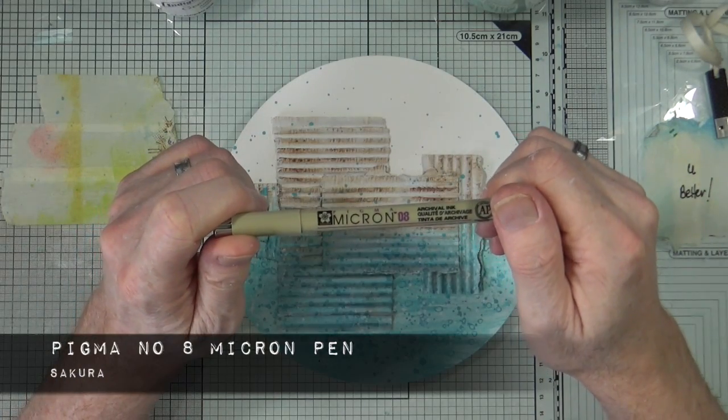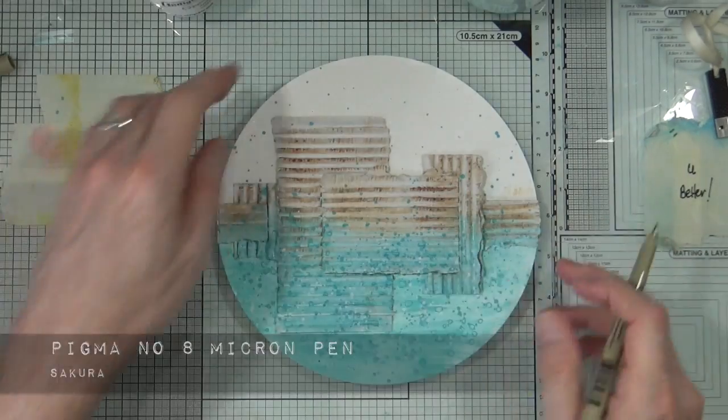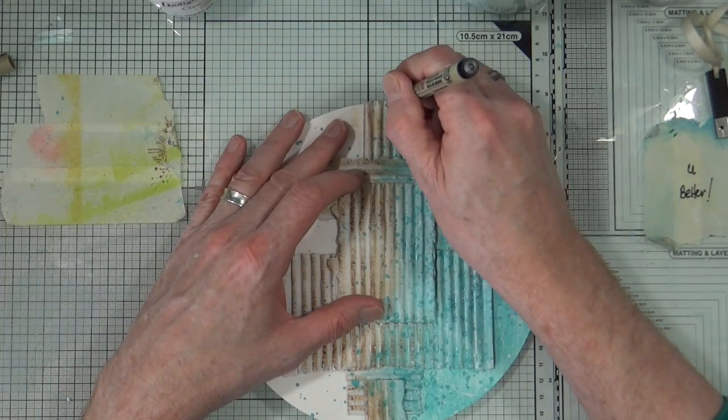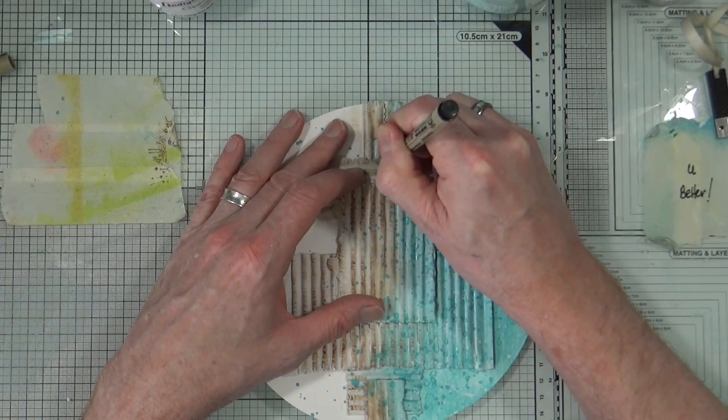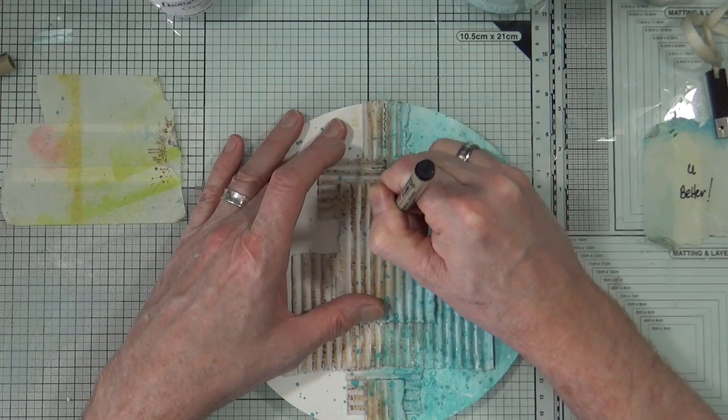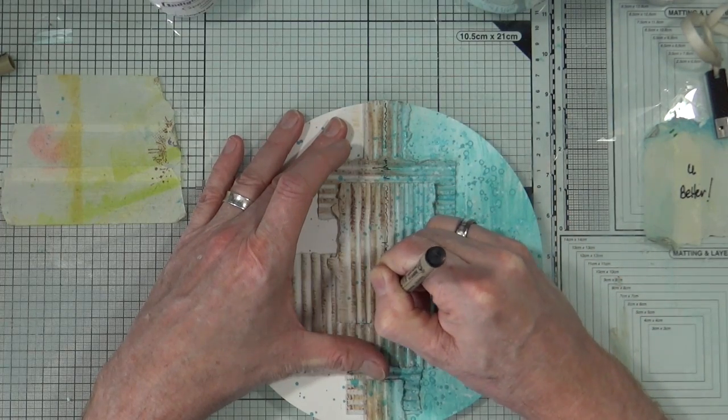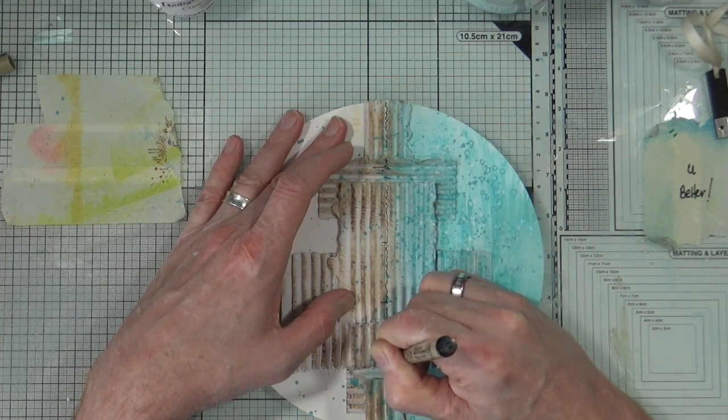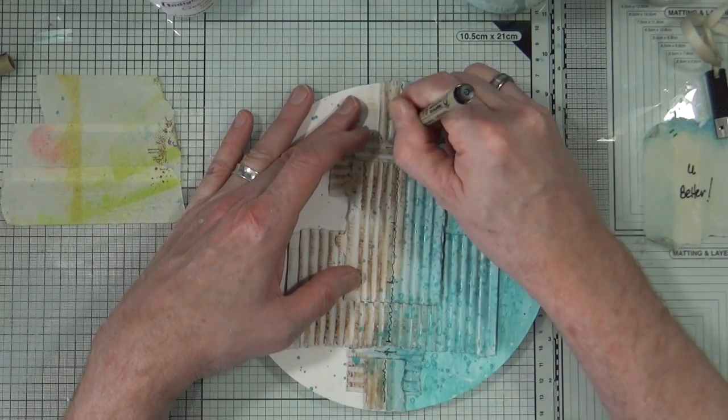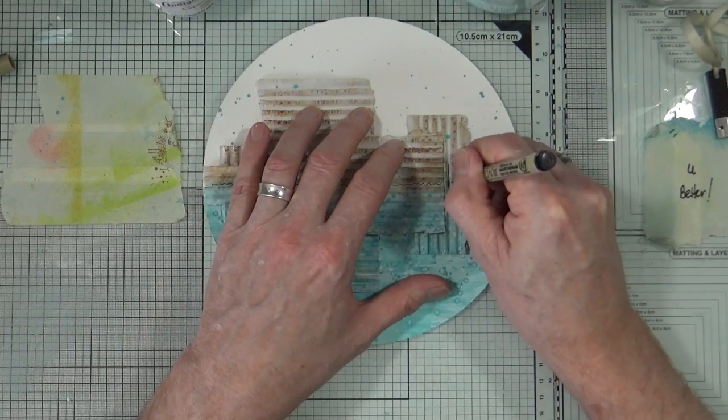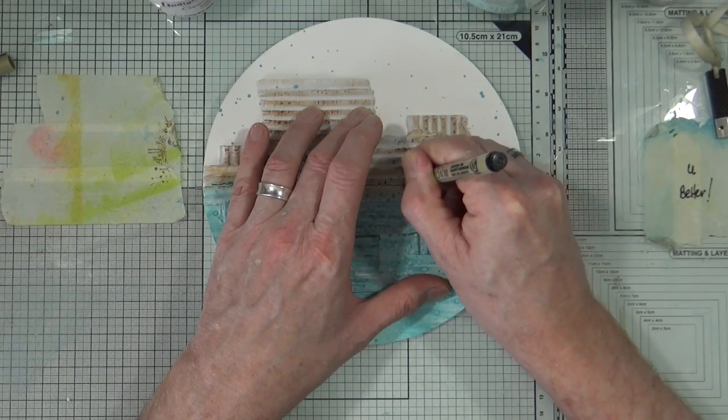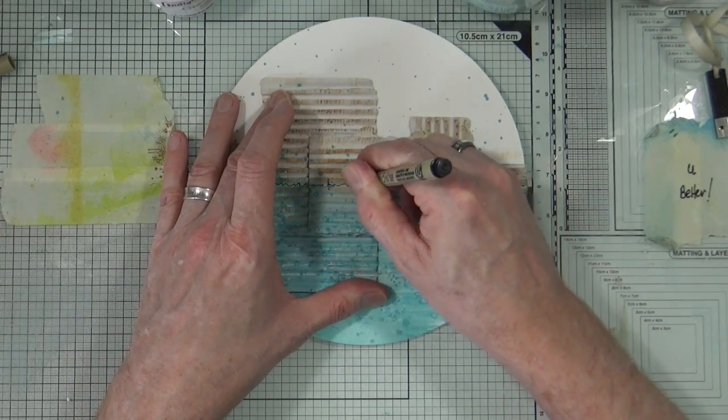Next I'm bringing out my Pigma Micron number 8 pen from Sakura and I'm going to add in my visible horizon line just by adding a scribbly doodly kind of border right the way down the middle. Just to make sure I have that depth of color, I'm going to do it twice, so I've gone over once and I'm going to go back over it again.